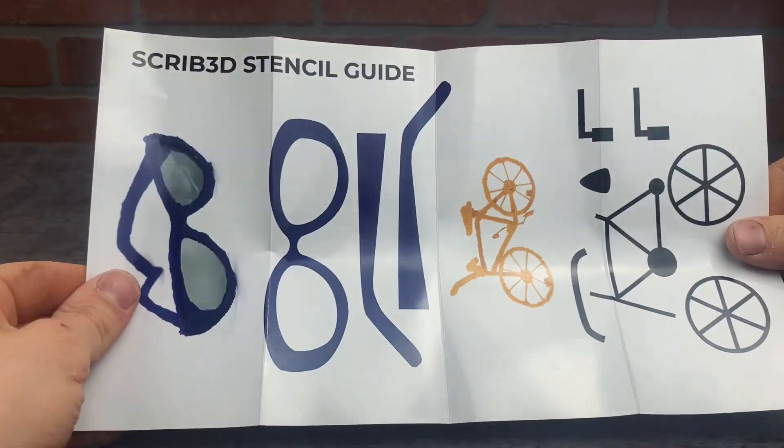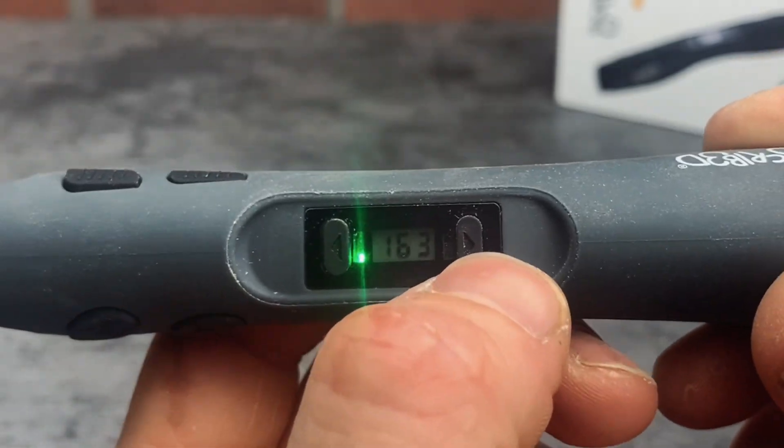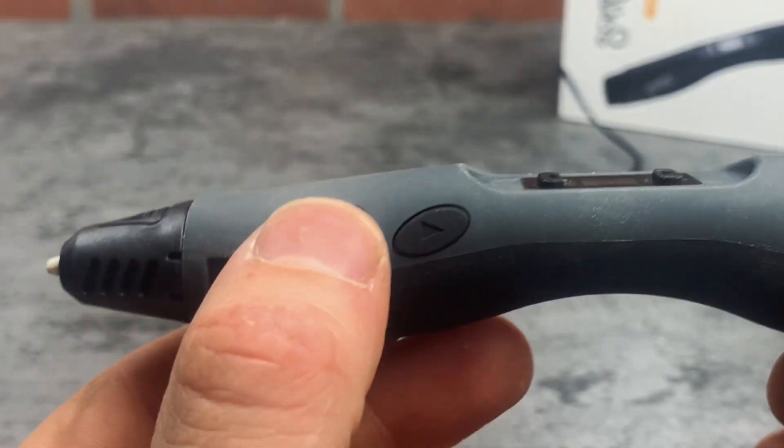It has two heat settings, one for PLA and one for ABS, but you can also fine-tune the heat by pressing these buttons. To use this, just tap the forward button and then feed the filament into the back of the pen until it comes out the front.